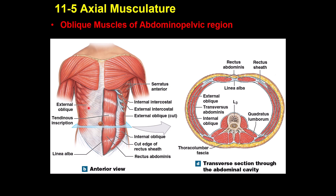Looking at the abdomen, the first muscle is called the external oblique, which runs in the same direction as the external intercostal — going downward and inward.